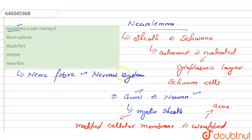So here from the given options, first is the blood capillaries, so it is not the outer covering of blood capillaries. Then muscle fiber—it is also not the outer covering of the muscle fibers. Then intestine, which is also incorrect. The right answer is option number four, nerve fiber.